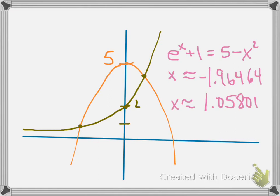These are the values we're going to need. One thing you can do for the AP exam is define them with a variable. We're going to let A equal negative 1.96464 and B equal 1.05801. Then when you write your integrals, you can just use A and B in place of those numbers, and it'll save you time and the hassle of writing out six digits repeatedly.